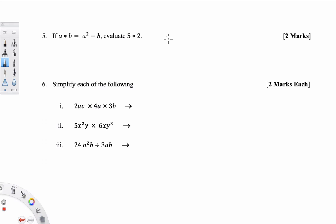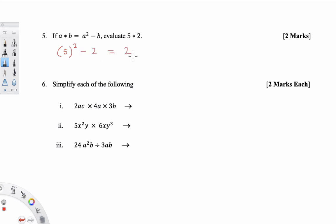We move on to questions 5 and 6. Question 5 is another binary operations problem. This one says A★B equals A squared minus B, and we're asked to evaluate 5★2. Just like before, you replace A and B with 5 and 2. So you have (5) squared take away 2. That should be 25 take away 2, which equals 23.